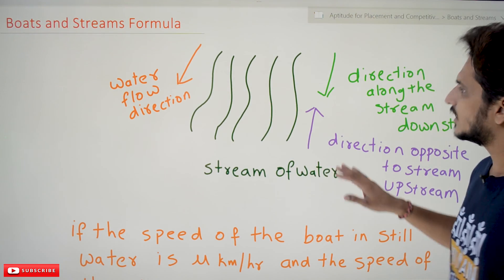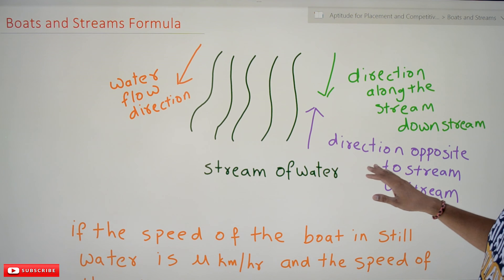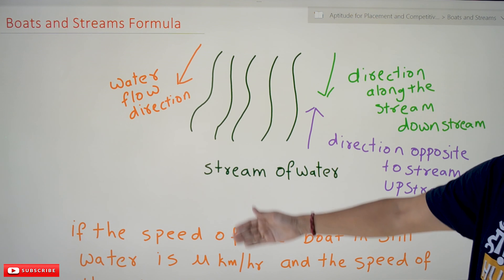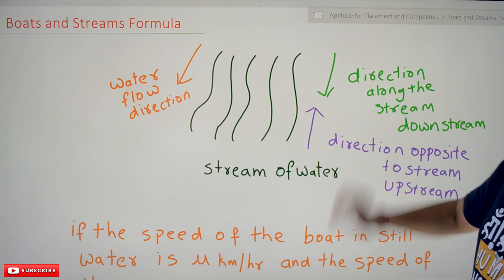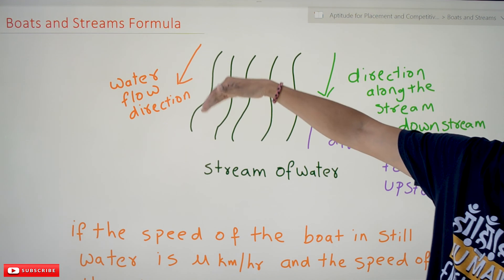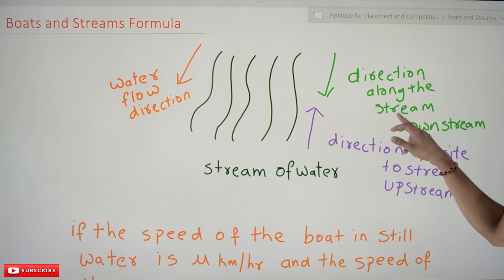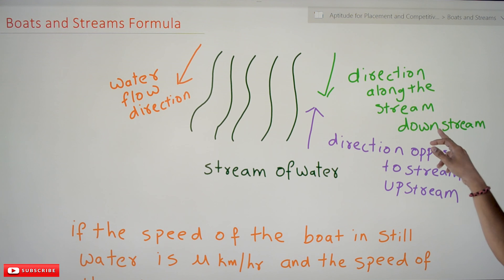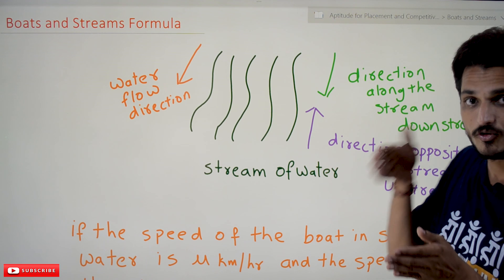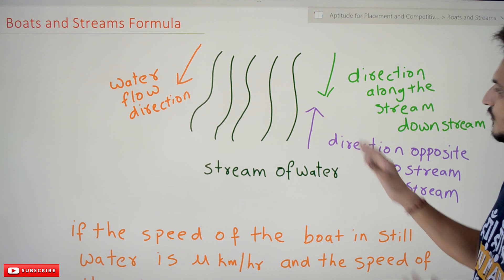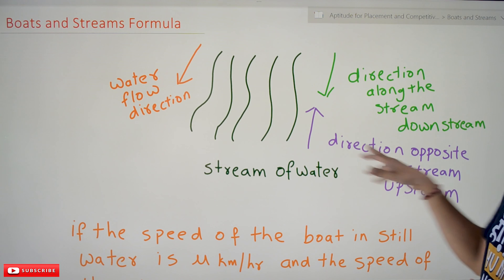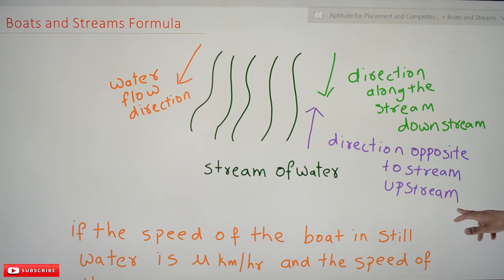Coming to today's class, first we are going to understand some terminology about boats and streams. Let's take a water flow in this direction — water is flowing in this direction, so we call it a stream of water. Moving along the direction of water flow is called downstream. If you are moving against the water flow, then we call it upstream.